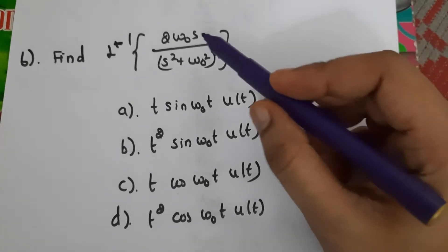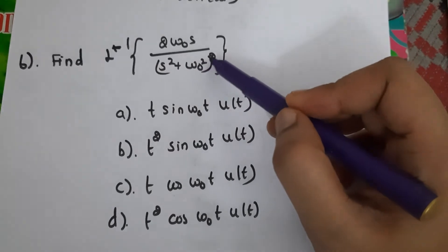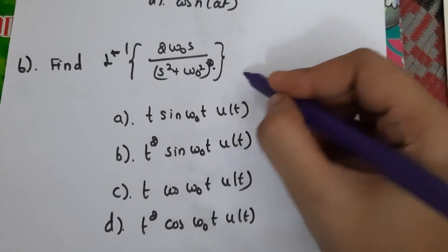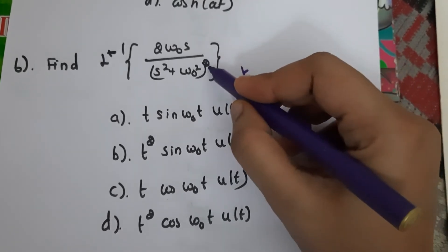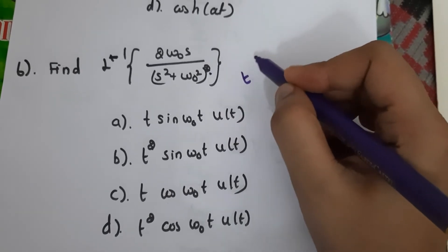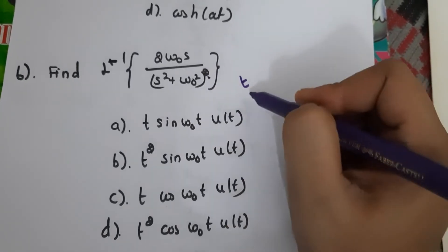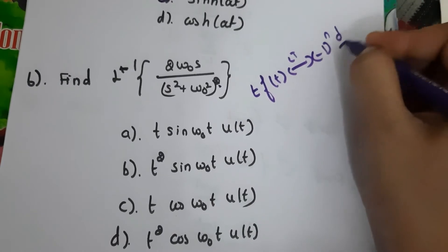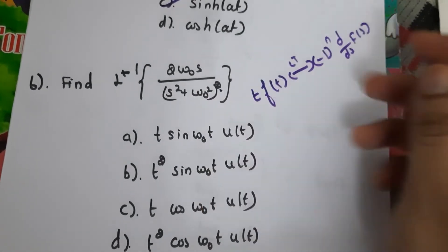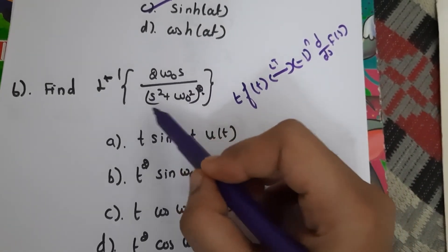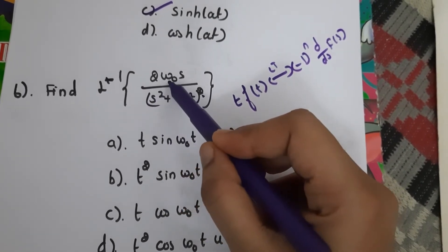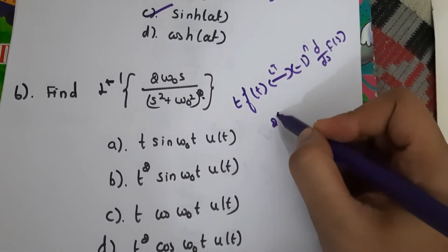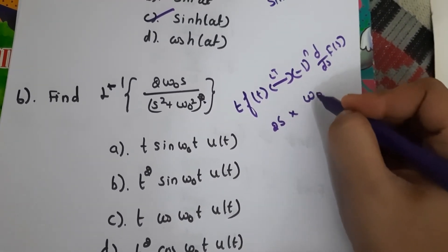Sixth question: find the inverse Laplace transform of 2ω₀s/(s² + ω₀²)². The denominator has power 2, which means the answer will contain t. Specifically, power 2 corresponds to t^1 in the answer. Using the property for t·f(t), if we differentiate F(s), differentiating s² we get 2s. Taking 2s outside leaves ω₀/(s² + ω₀²)².